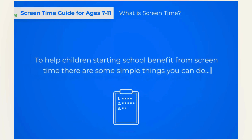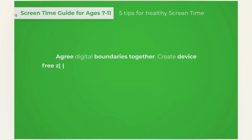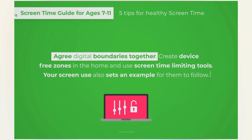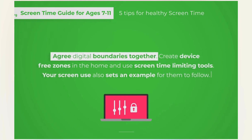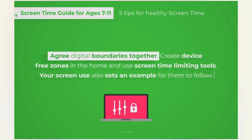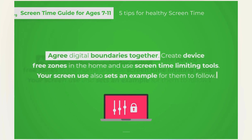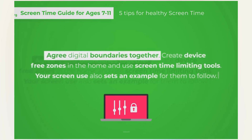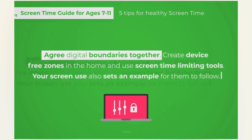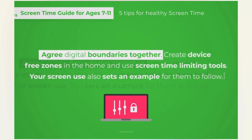To help children stick to digital boundaries, get them involved in the process of setting simple rules on how they should use screens in and out of the home. Choosing device-free zones, keeping phones out of the bedroom at night, and using free tools to turn devices on and off at different times are just some ways to help children strike a healthy balance. Make sure to model the behaviour you'd like to see in them — children tend to do what you do, not necessarily what you say.